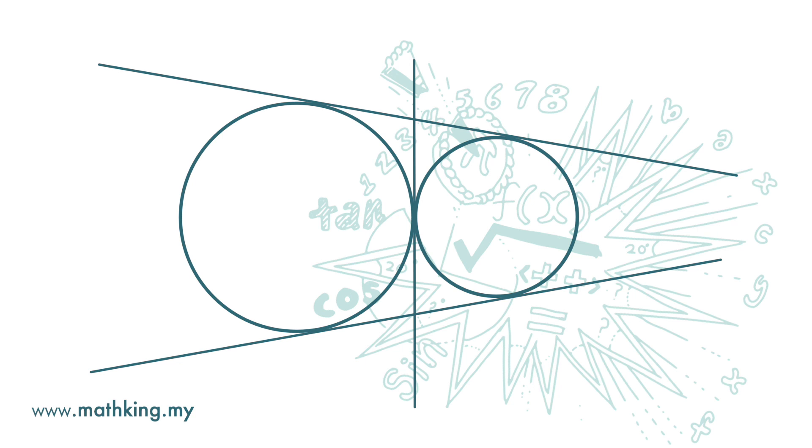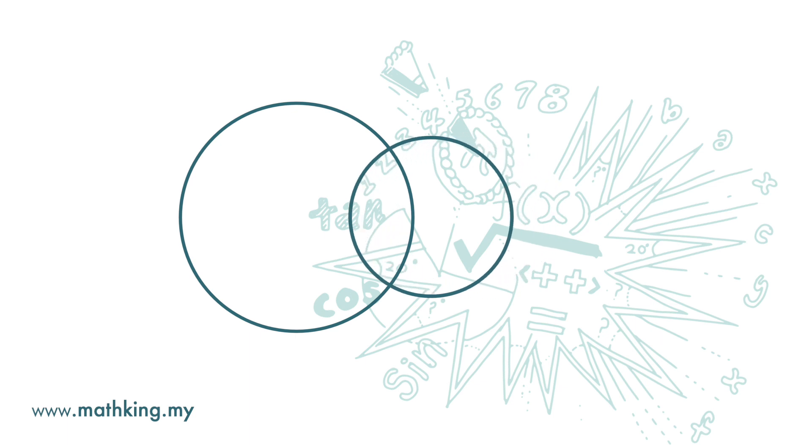If the circles overlap each other, then we have two common tangents only. And in this case, we have one common tangent only for the two circles.